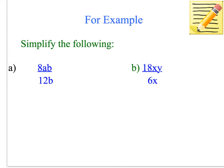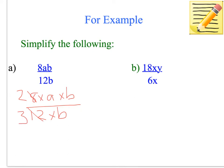We need to simplify 8AB divided by 12B. We write it with multiplication signs: 8 times A times B divided by 12 times B. Now we look at the numbers for a common factor. 8 doesn't go into 12 and 12 doesn't go into 8, but 4 is a factor of both — 4 goes into 8 two times and into 12 three times. Then A is not in both numerator and denominator, so we leave it. But B is in both, so we cancel B out.